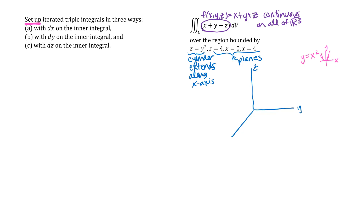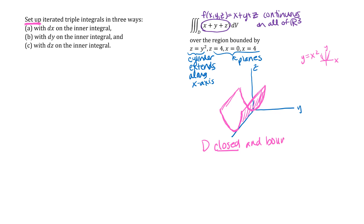The surface is a cylinder that extends forward and backward in the x direction, going upward. But the region needs to be closed and bounded, and so far it's going off to infinity — meaning I haven't accounted for all the surfaces yet. The plane z equals 4 is parallel to the xy plane and forms the top of our region.